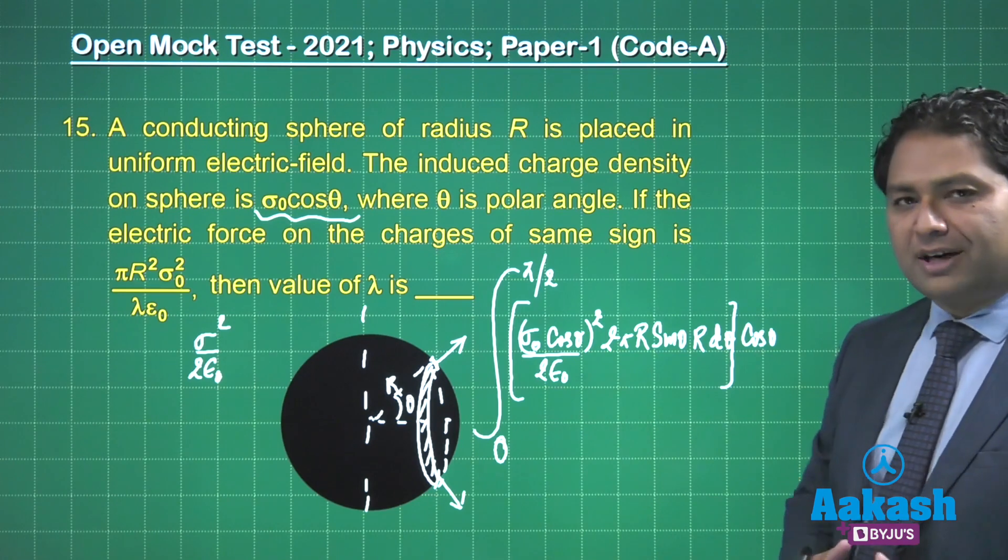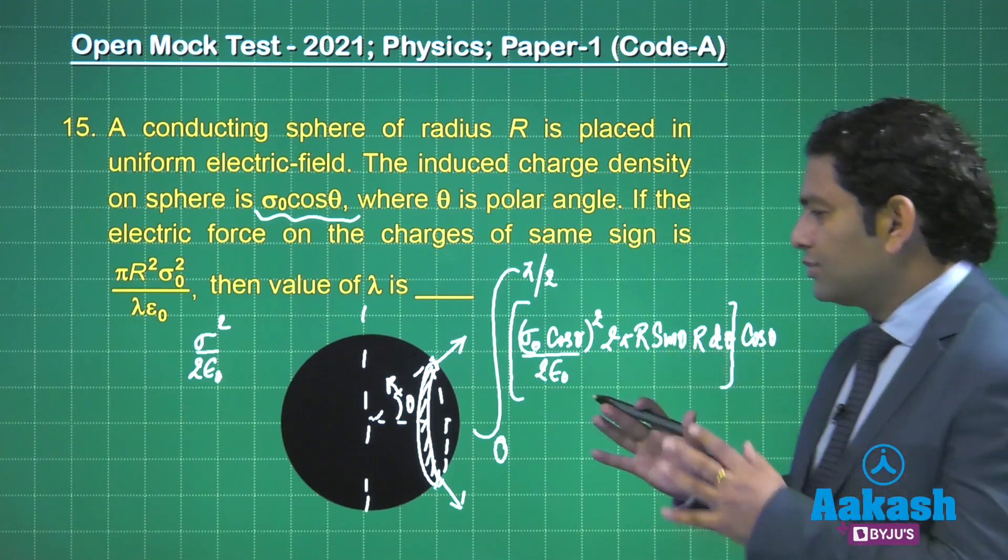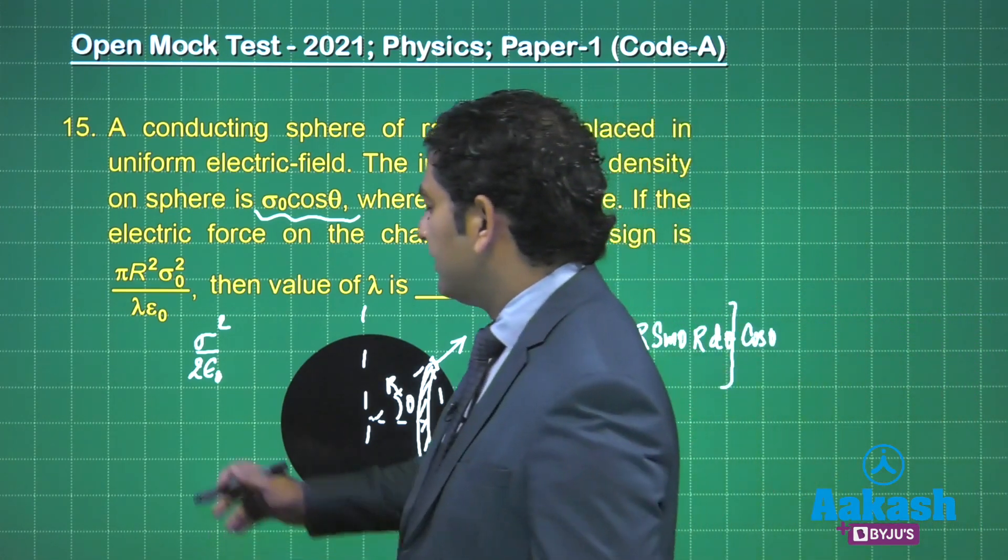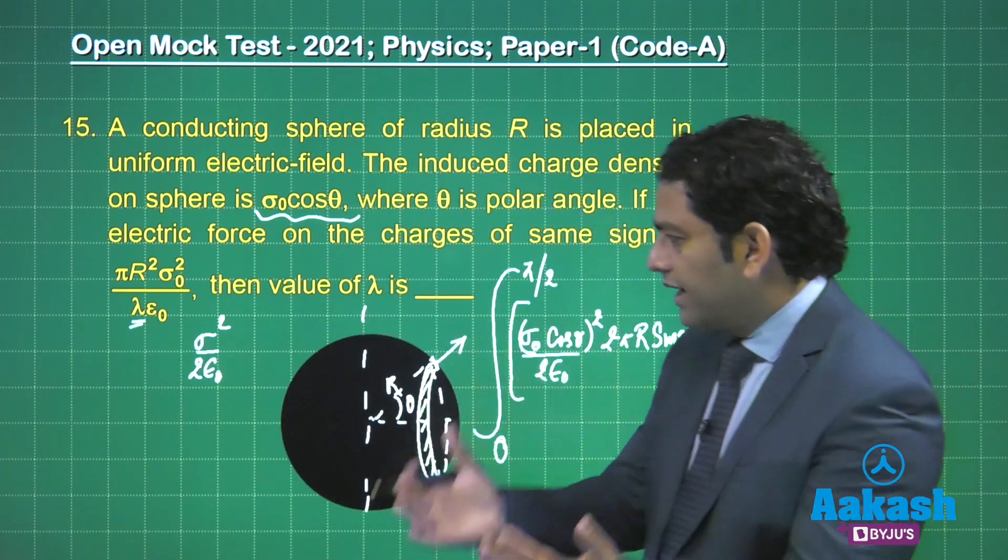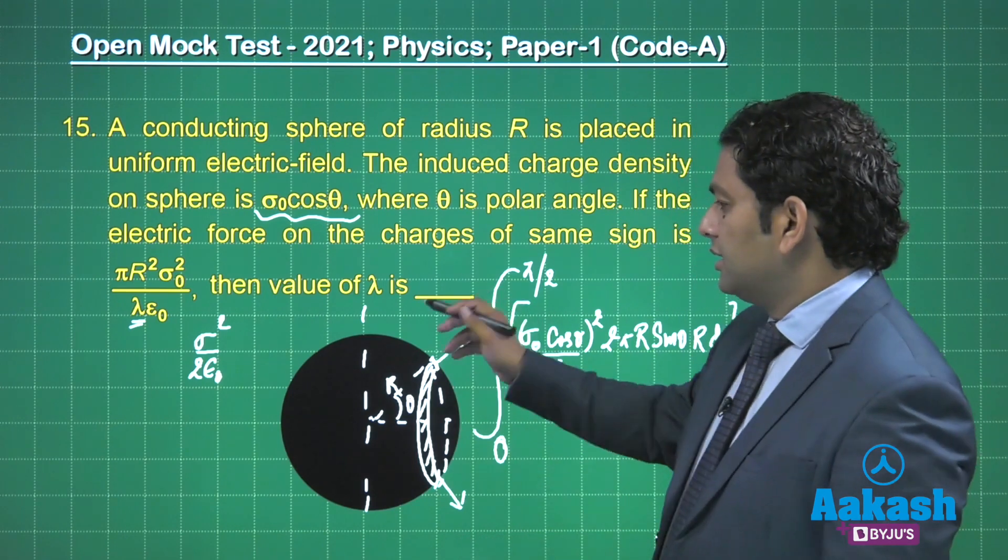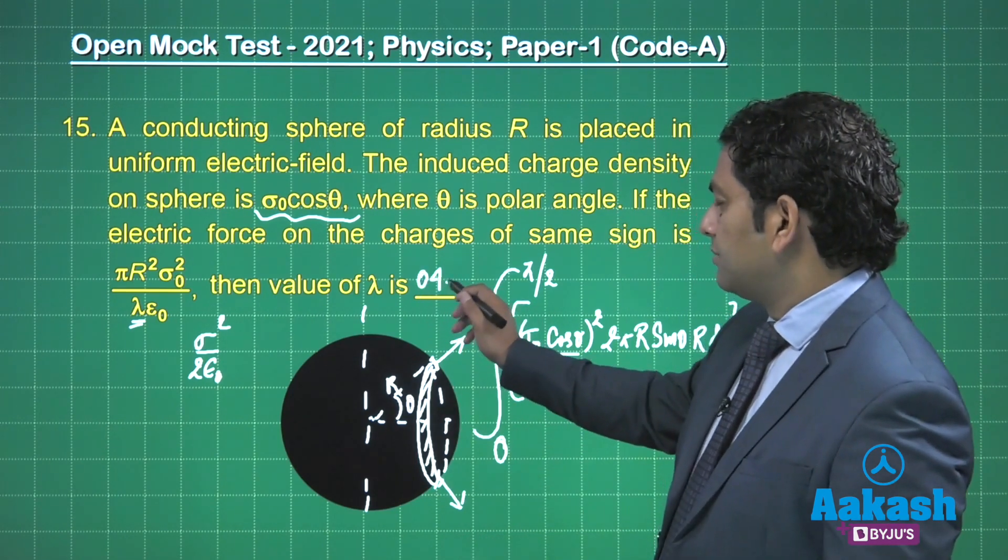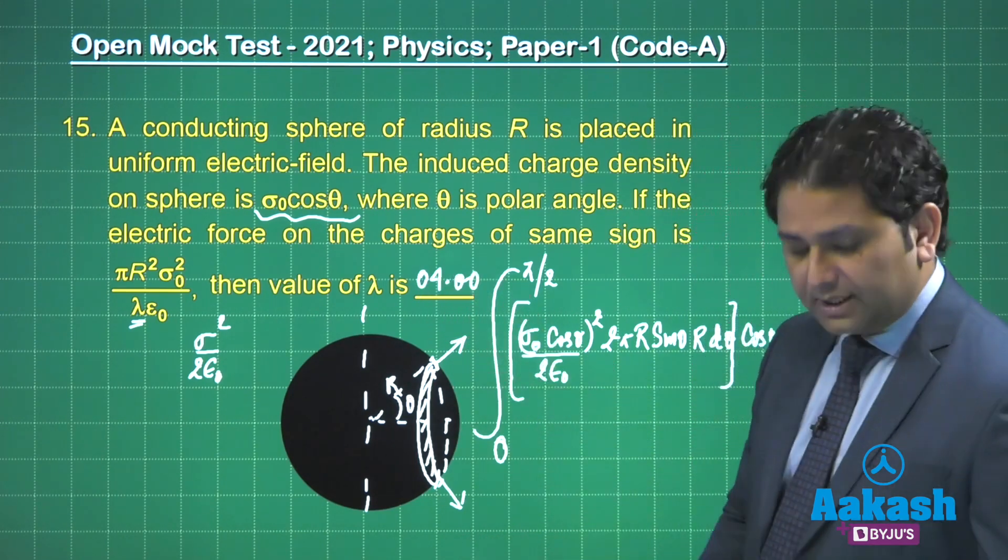When you solve this, the value of λ comes out to be 4 because the force will be πr²σ₀²/4ε₀. So your option is going to be 04.00.